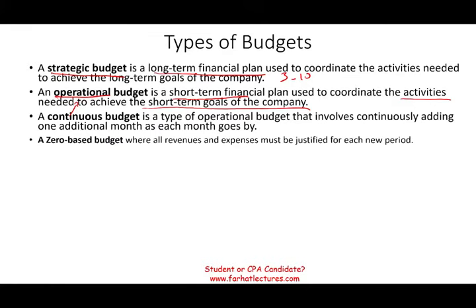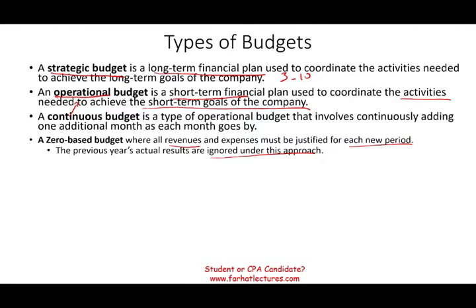A zero-based budget is one where all revenues and expenses must be justified for each period. Usually, budgets are based on the prior period — you start from last year's numbers and roll them over. In a zero-based budget, prior year numbers are ignored and you start from scratch. Don't worry about what we did last year in revenues and expenses; this year we create the budget from zero.